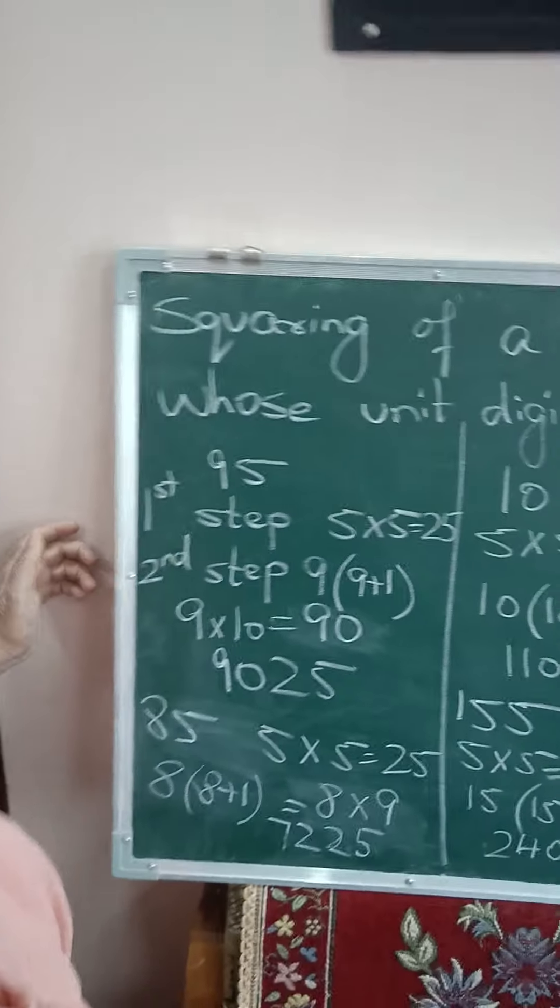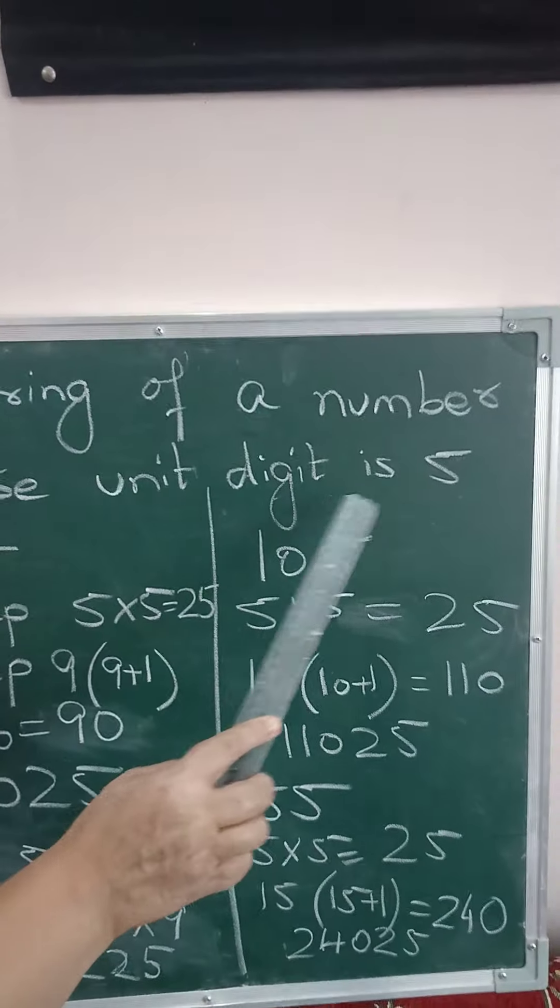And I will give you innumerable examples. Please see carefully, then I will give you sums. You have to solve it and find out the answers. So here we are with the first Vedic Math trick, squaring of a number whose unit digit is 5.